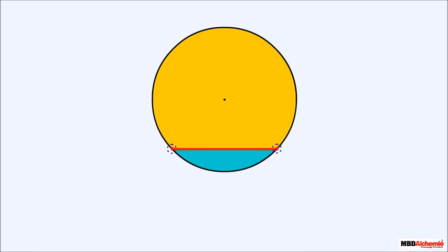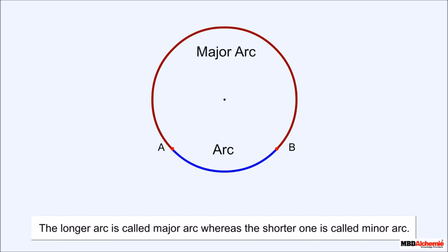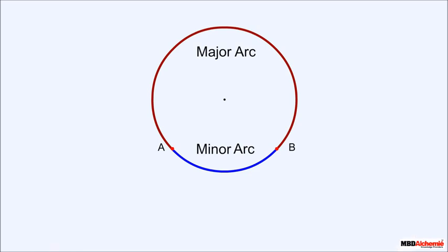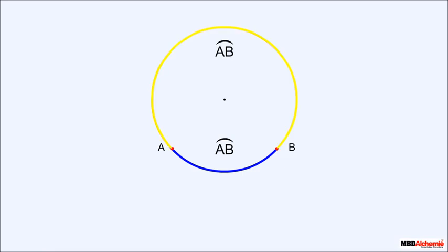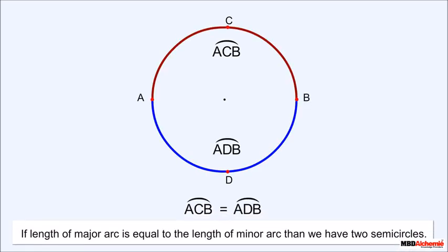Now consider the two points where the chord touches the circle. From one point to the other we can go either clockwise or anti-clockwise, giving us two parts of the circle — each of these is called an arc. The longer arc is called the major arc and the shorter one is called the minor arc. We write a curve over the name to represent an arc, like arc AB. To distinguish, we mark point C on the major arc and point D on the minor arc — so arc ACB is the major arc and arc ADB is the minor arc. If the lengths are equal, we have two semicircles.